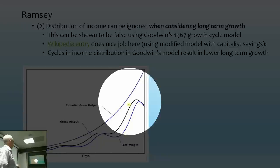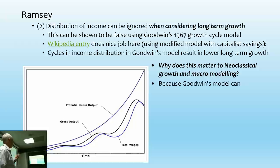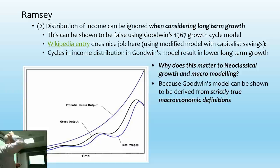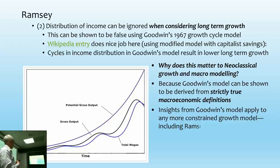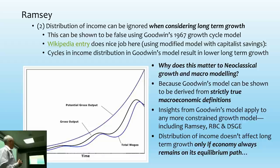You have a potential gross output level rising exponentially, and a total actual gross output which is lower. Part of the reason is that savings out of profits are included. But the key point: if you look at Goodwin's model, why would neoclassicals worry about a post-Keynesian model? They wouldn't — they wouldn't know it exists. But I can derive Goodwin's model from strictly true macroeconomic definitions. I'm going to take you through that and show you the dynamics and what that implies for how neoclassicals do their own modelling. If you can derive it from definitions, then it applies to any model.